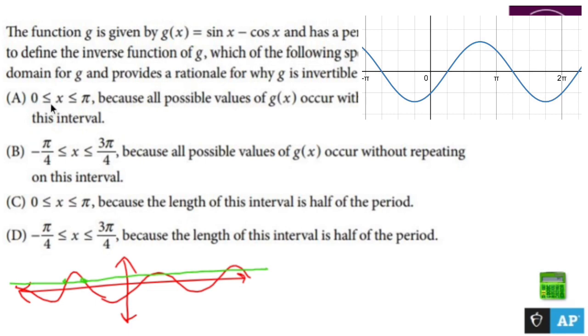Well, this here says between zero and π, because all possible values of g occur without repeating on the interval. Well, zero and π according to this picture, zero and π fails the horizontal line test. So A is no good.